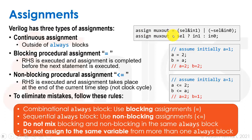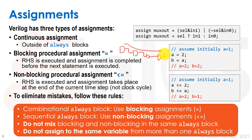We have three types of assignments. Continuous assignments use assign outside always blocks. Blocking procedural assignments use = and are only used inside combinational blocks — similar to traditional programming where the first line is evaluated before the second. This is like a chain of logic gates where each gate fires sequentially, which is why we use blocking assignment for combinational logic.